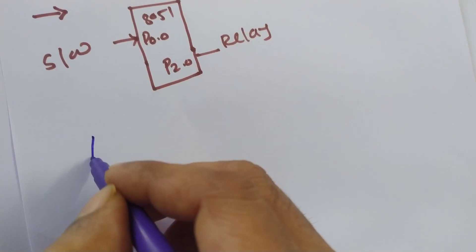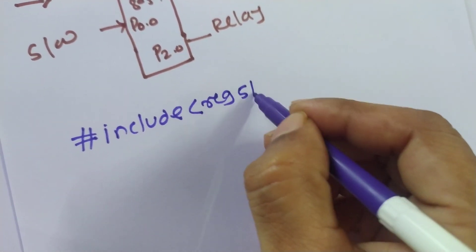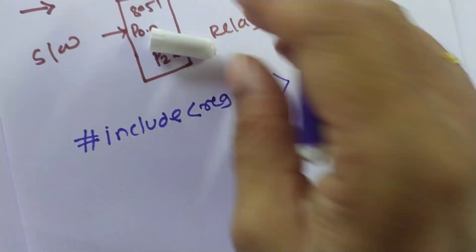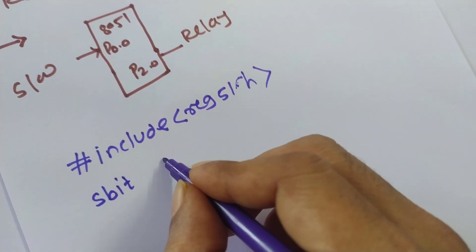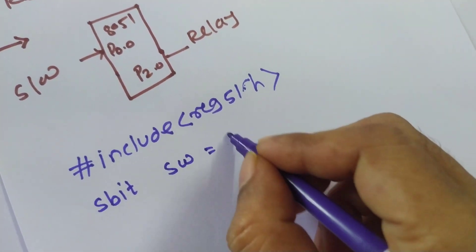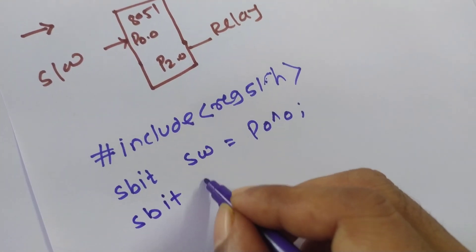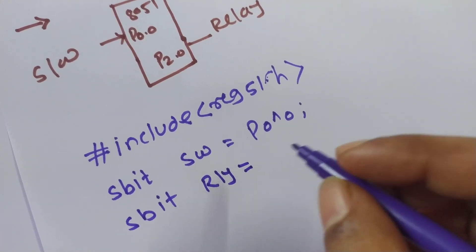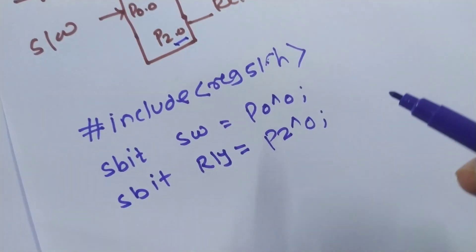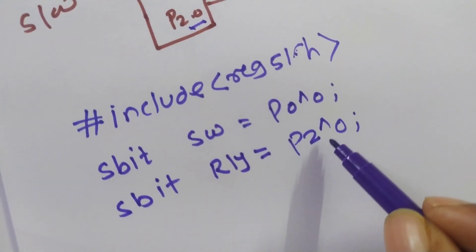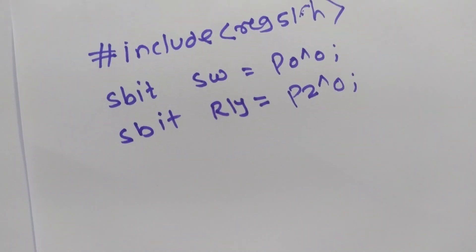We declare the variables: 'sbit sw' is equal to P0.0 — this is the switch variable. Another variable 'rly' is the short form for relay, assigned to pin P2.0. Whenever you need to use pin P2.0 in the program, you can refer to it by the name 'rly'.